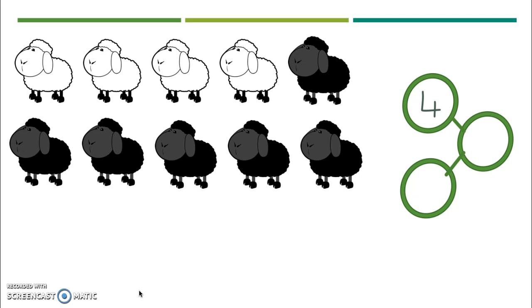All right so if there are four white sheep, how many black sheep are there? Good! There are six. I'm gonna put that in my other part.